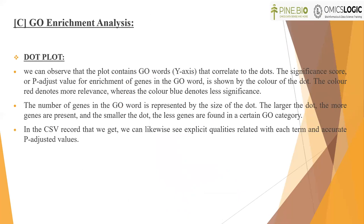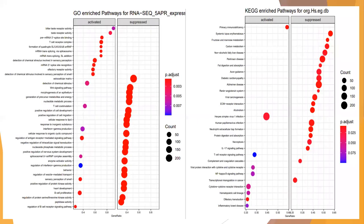Now let's look at the geo-enrichment analysis results, specifically the dot plot. The GO terms are on the y-axis correlated to the dots. The color of the dot represents the p-adjusted value: red indicates more relevance and blue indicates less relevance. The size of the dot represents the number of genes in the GO term — the larger the dot, the more genes are present. In the CSV file obtained, we can also see explicit values related to each term and their adjusted p-values.